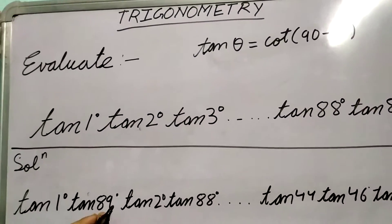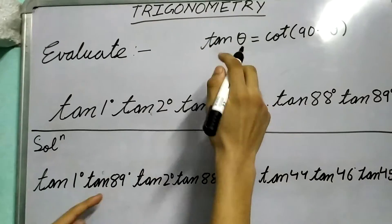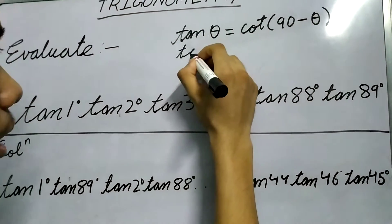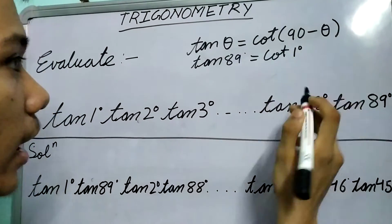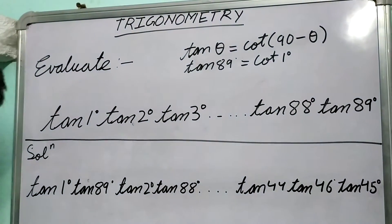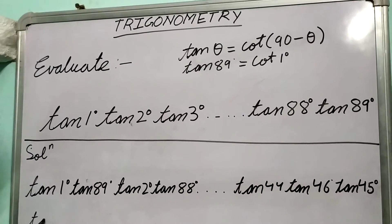So what if we put 89° instead of θ? So we get tan 89° = cot 1°, right? 90 minus 89 is 1.